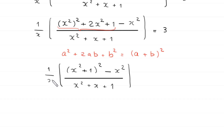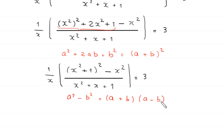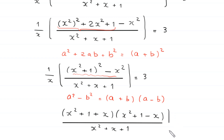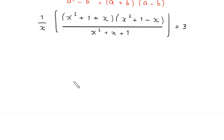Now using the algebraic identity a² − b² = (a + b)(a − b), the expression (x² + 1)² − x² becomes (x² + 1 + x)(x² + 1 − x). So we have (x² + x + 1)(x² − x + 1) divided by (x² + x + 1), times 1 over x, equal to 3. The (x² + x + 1) cancels out.